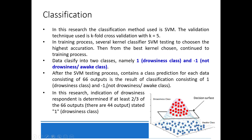In this research, the classification method used is SVM. The validation technique used is k-fold cross-validation with k equal to 5. During the training process, several SVM kernel classifiers are tested to choose the highest accuracy. Data is classified into two classes: class 1 for drowsy and class negative 1 for awake.